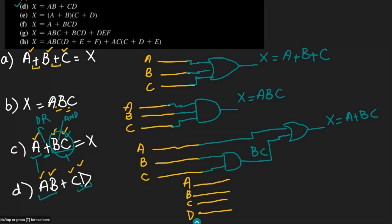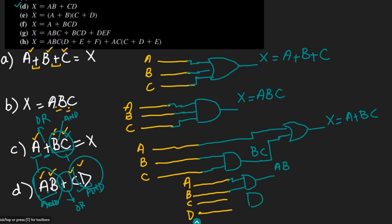The operations here are: AND between a and b, AND between c and d, and then an OR of the two results. So first, a and b are given to an AND gate to produce ab. Then c and d are given to another AND gate to produce cd. Finally, these two outputs are given to an OR gate, producing ab + cd = x. This is the answer for part D.